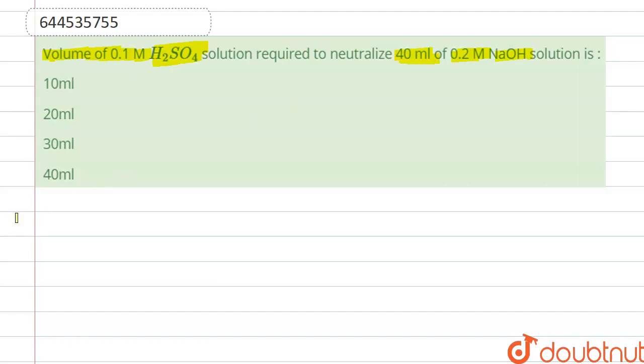We have to find the volume of H₂SO₄. So here we know that N₁V₁, the relation N₁V₁ is equal to N₂V₂.